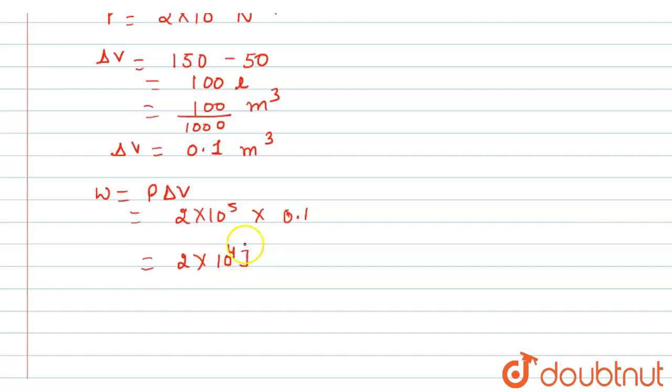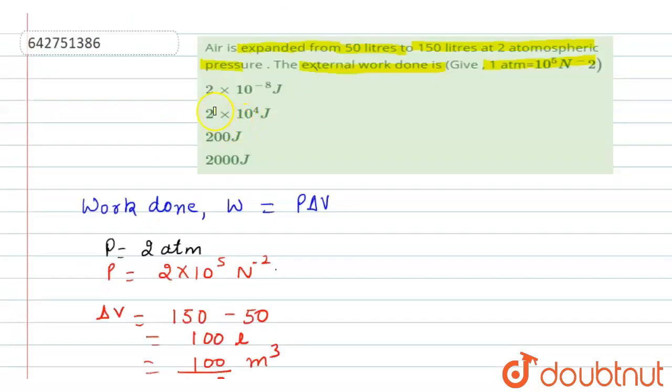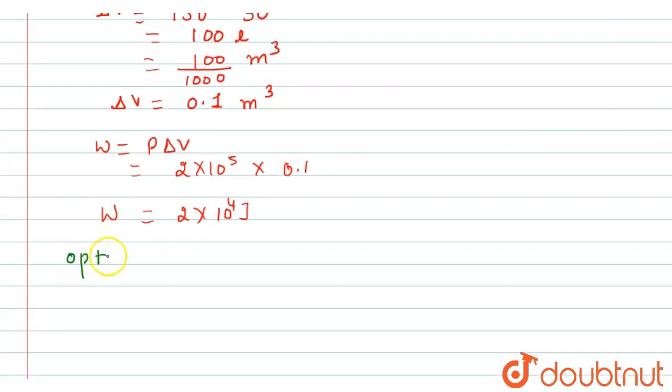SI unit, because it is in a Newton per meter cube. So that's why work done, external work done, is 2 into 10 raised to power 4 joule. From this explanation, which option is correct? 2 into 10 raised to power 4 joule is our second option.